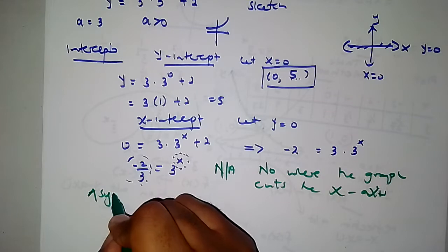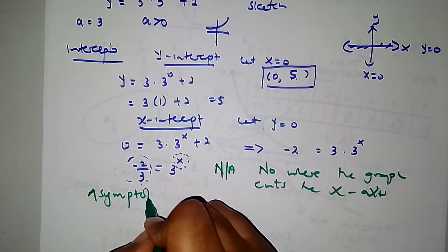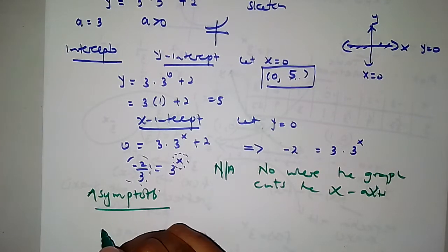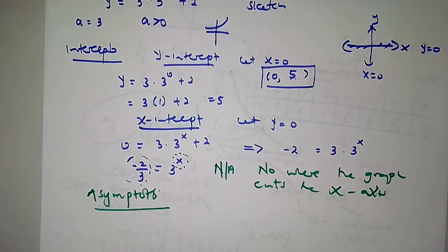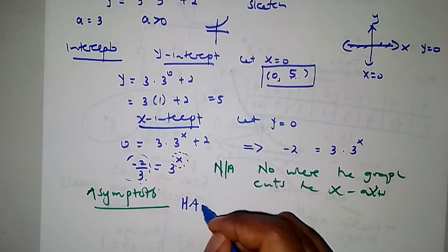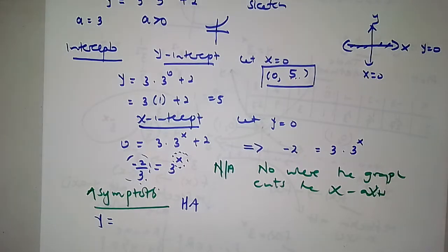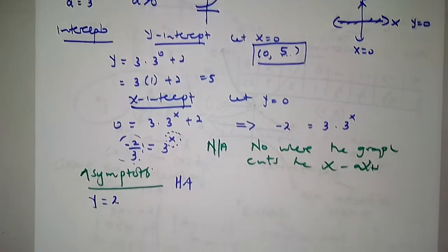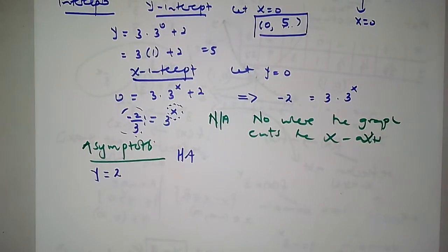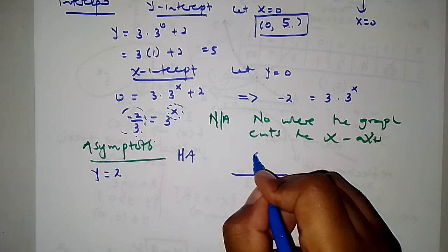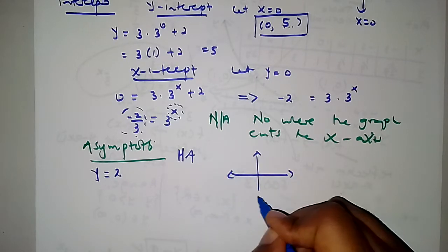Now the asymptote. Remember, exponential functions have a horizontal asymptote, which is y equals to something. In our case, y is equals to 2. So we've got all of these — the y-intercept, no x-intercept, and the asymptote. Now it's time to sketch the graph.